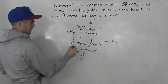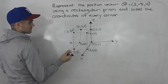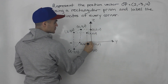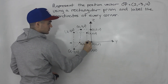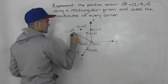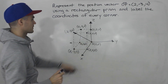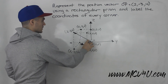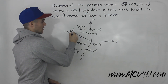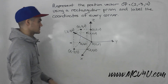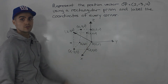Now we can draw the vector. The vector has its tail at the origin and its head at this coordinate here — (2, -3, 4). So if we join these, the vector looks something like that — going through the prism, from the furthest point on the base to the closest point on the top face. That's how you represent that vector using a rectangular prism.